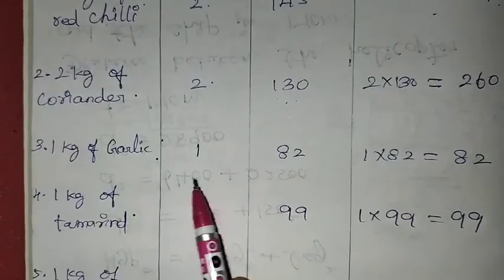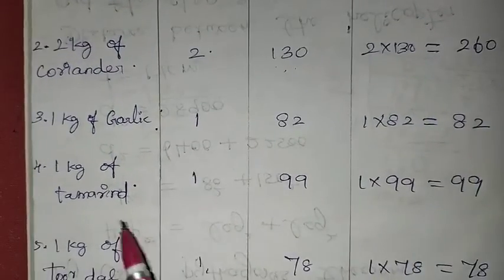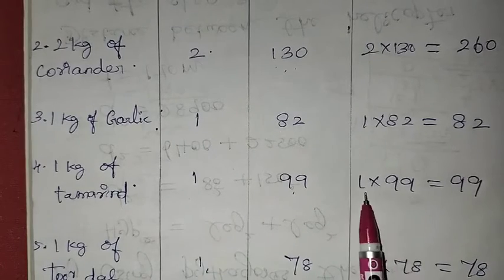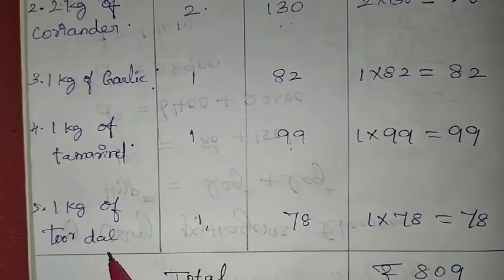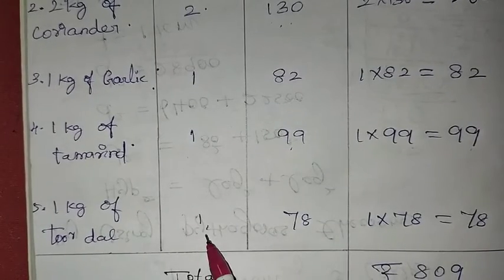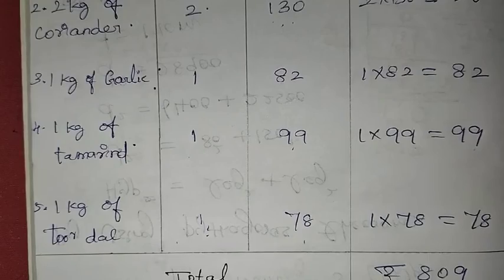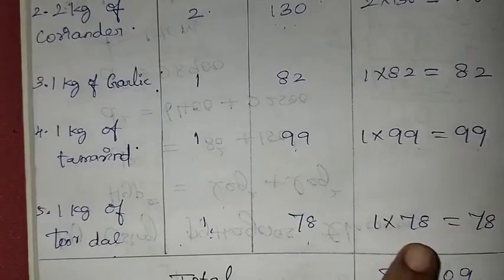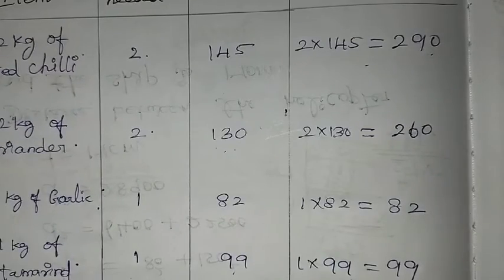1kg of tamarind is Rs.99. Adding 1kg of toor dal, 1 into 78 — Rs.78 per kg. So now we add all to get close to 1,000.